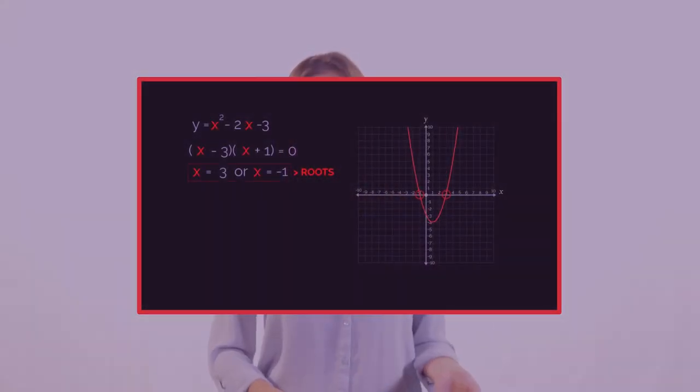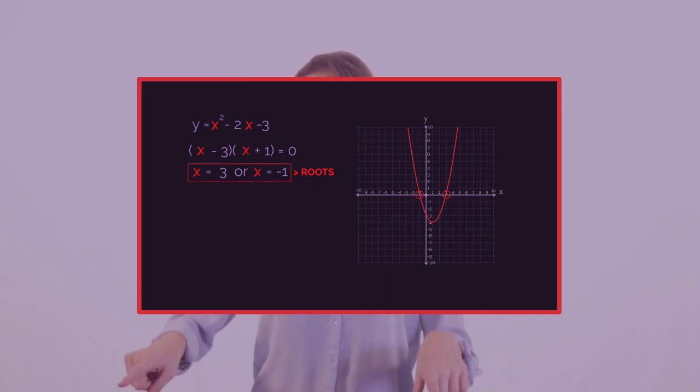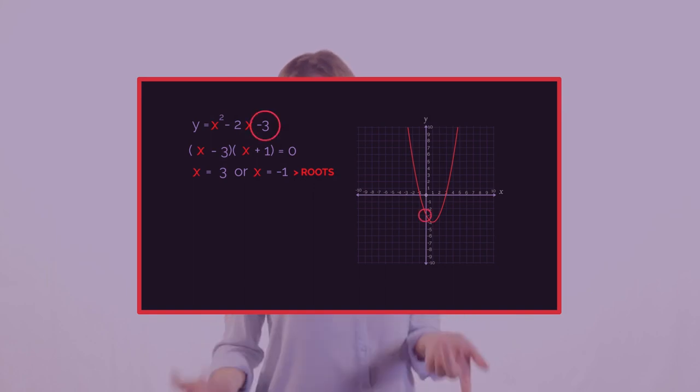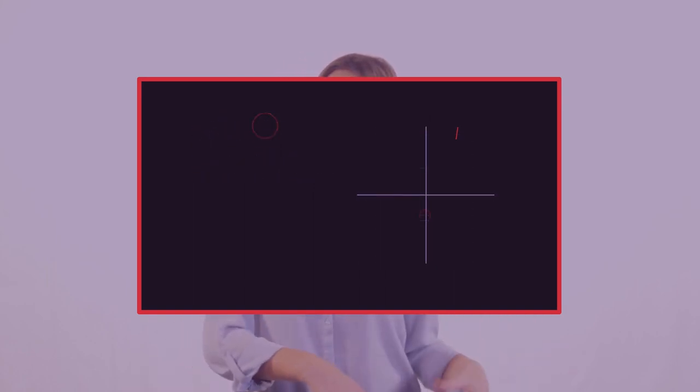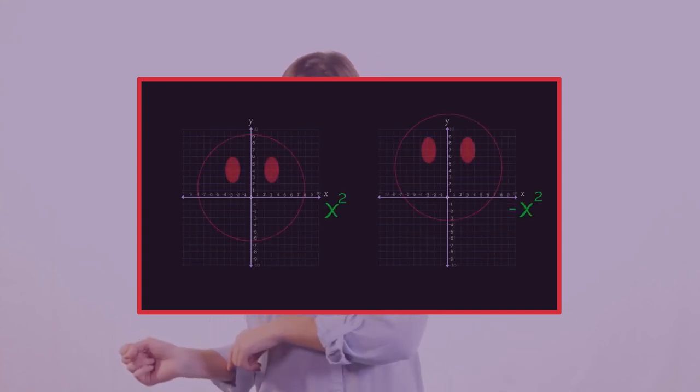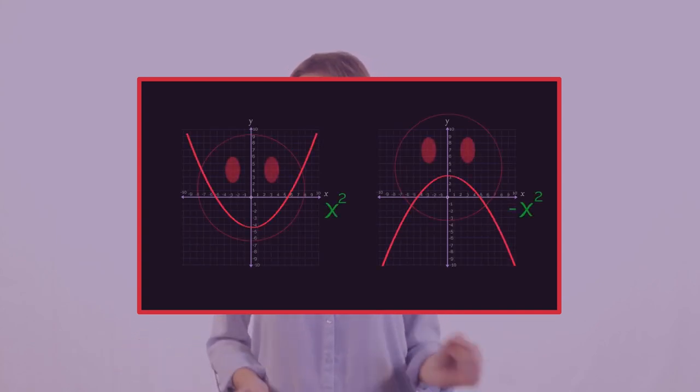In an earlier video we discovered that the roots of a quadratic give us the x-axis intercepts and the number on its own in a quadratic gives us the y-intercept. We also know that a positive x squared gives us a smiley u-shape and a negative x squared gives us a sad n-shape curve.